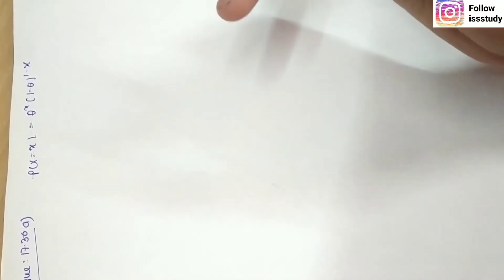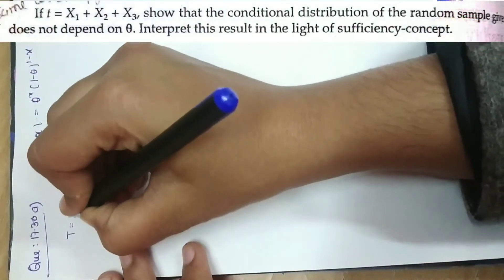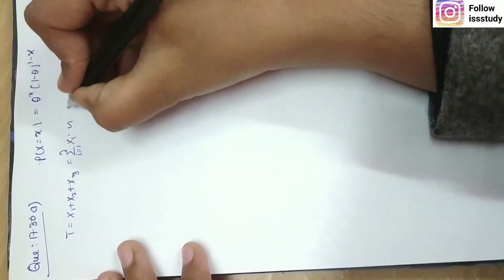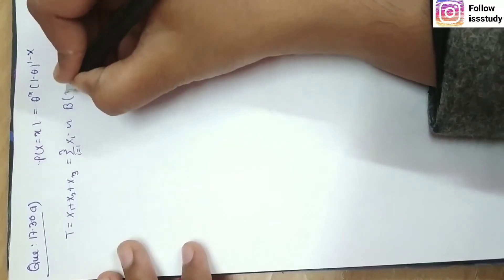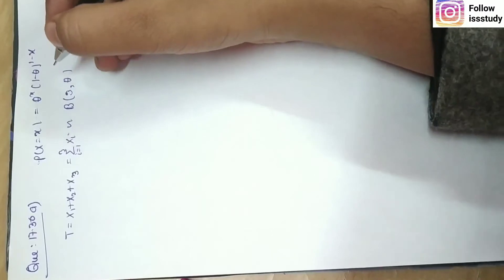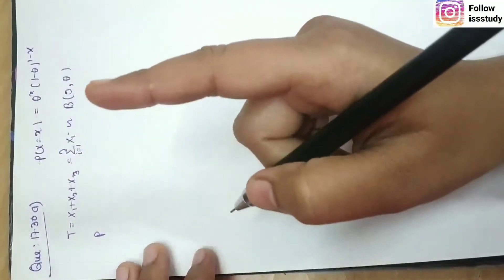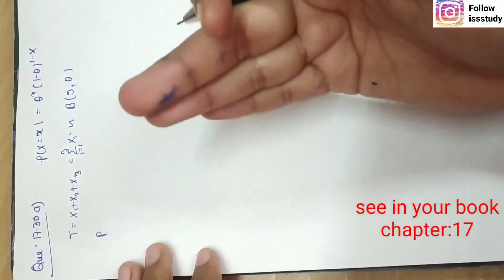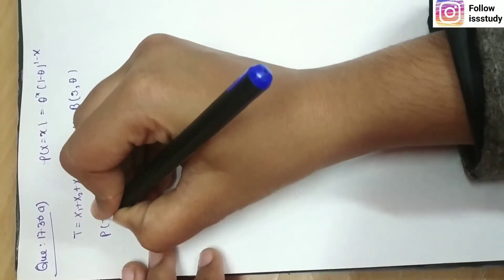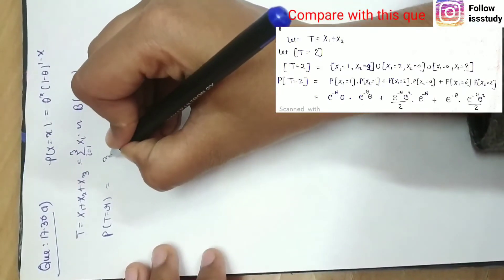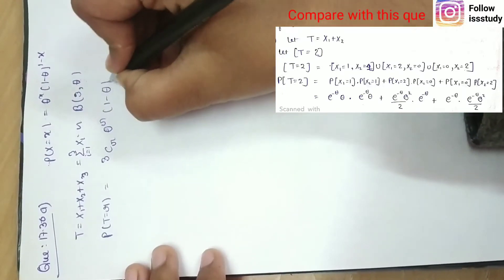Since T = X1 + X2 + X3 = Σ(i=1 to 3) Xi, T follows a binomial distribution with parameters n = 3 and p = theta. Then we need to compute P(T = r). Since T ~ Binomial(3, theta), we have P(T = r) = 3Cr · theta^r · (1 - theta)^(3-r).